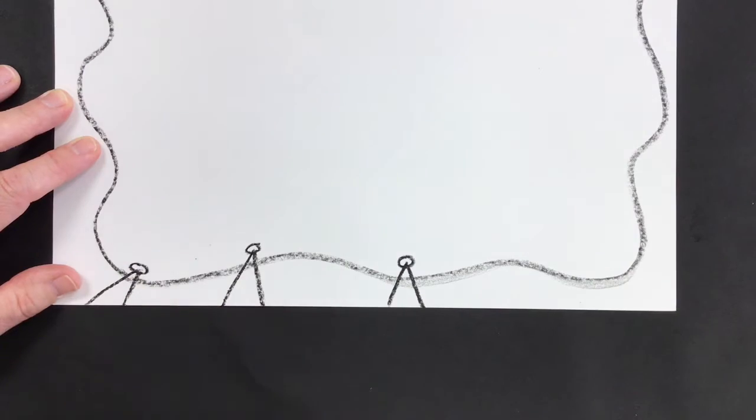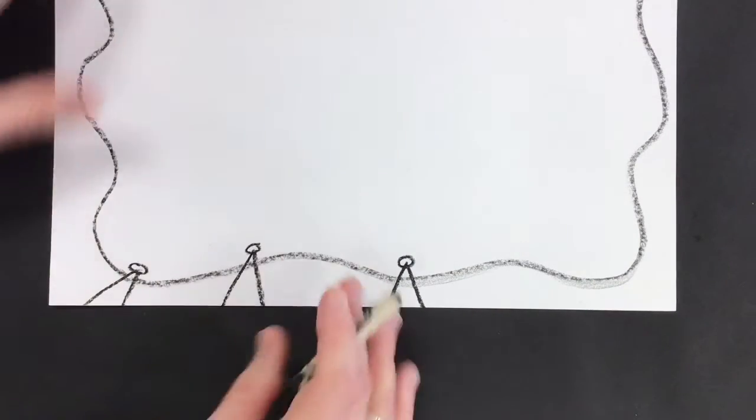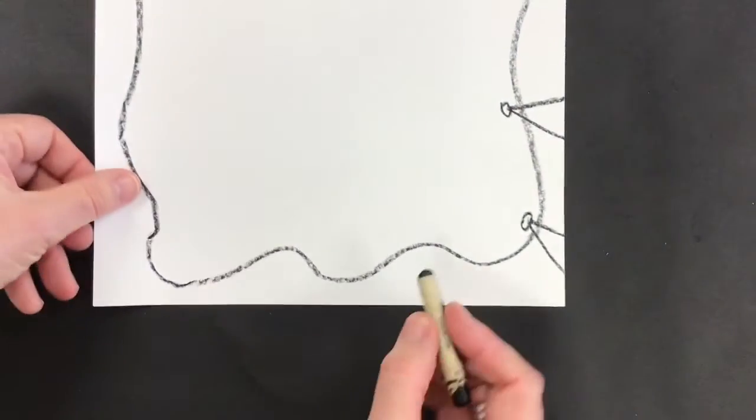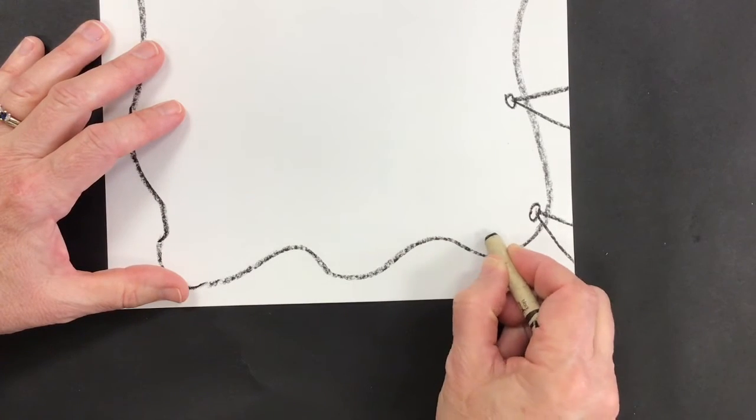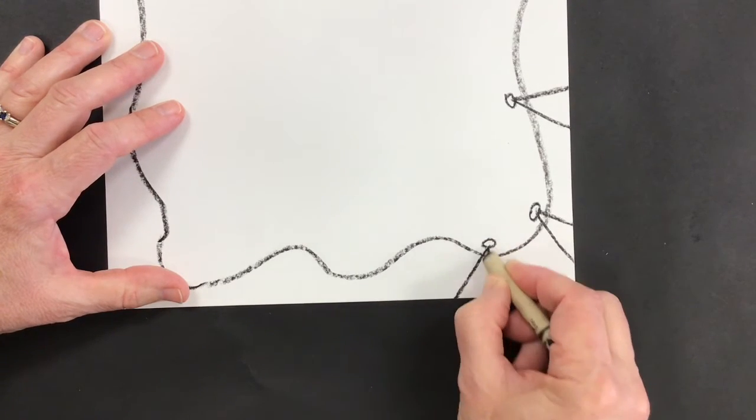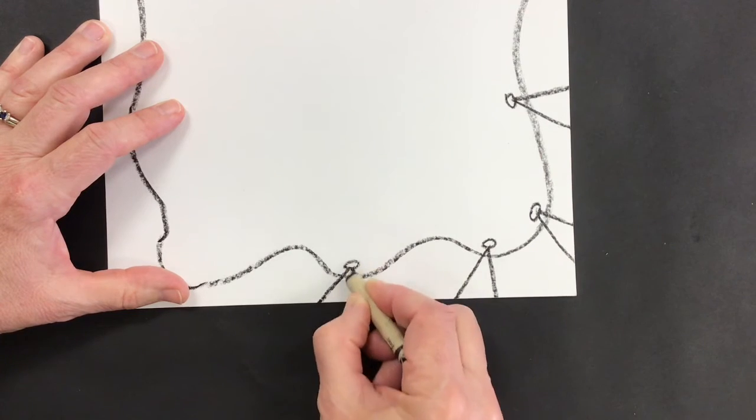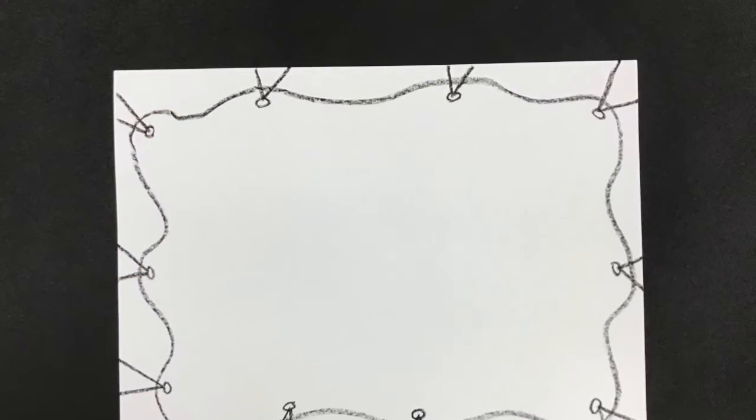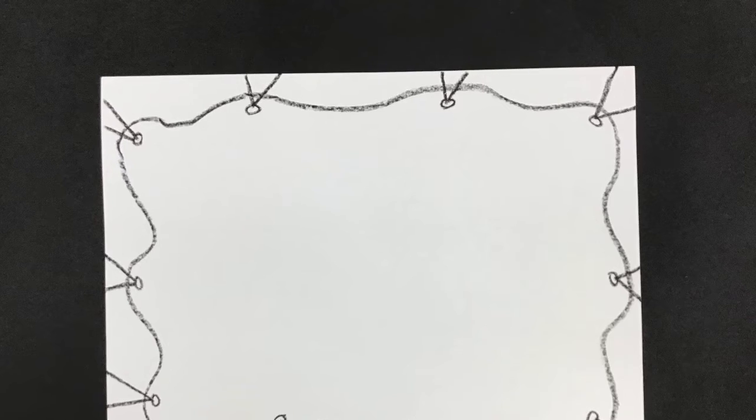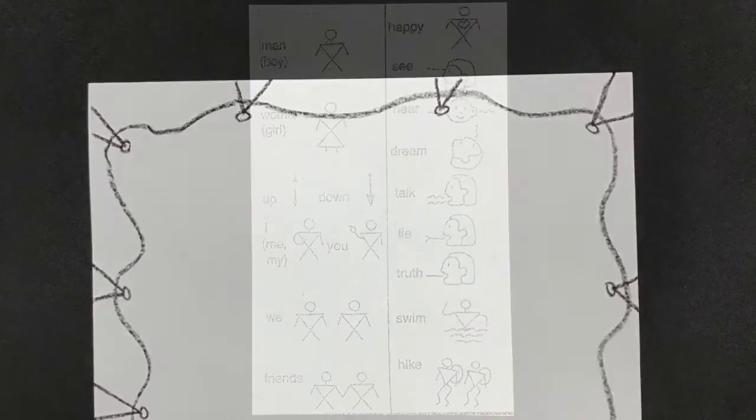You're gonna do these little circles for holes all the way around the entire edge of your buckskin. So this is mine all finished with the little pretend holes and strings.